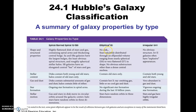For elliptical galaxies, of course there's no disc — that's really important. The stars are basically evenly distributed, and it's basically this football-shaped thing called an ellipse. If it's the most circular, that's E zero; the most football-shaped it can possibly be, that's called an E seven. So it goes from E zero, E one, and so forth all the way to E seven.